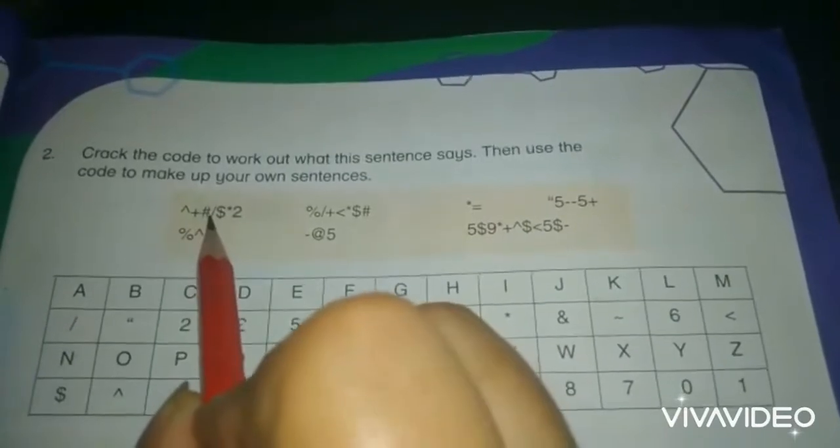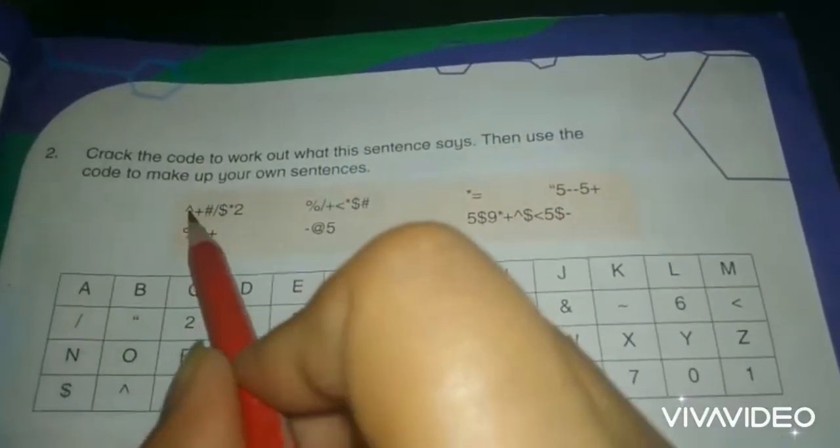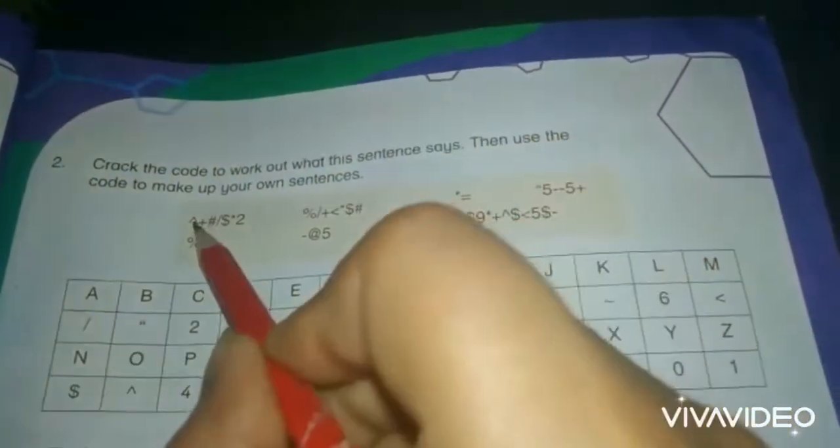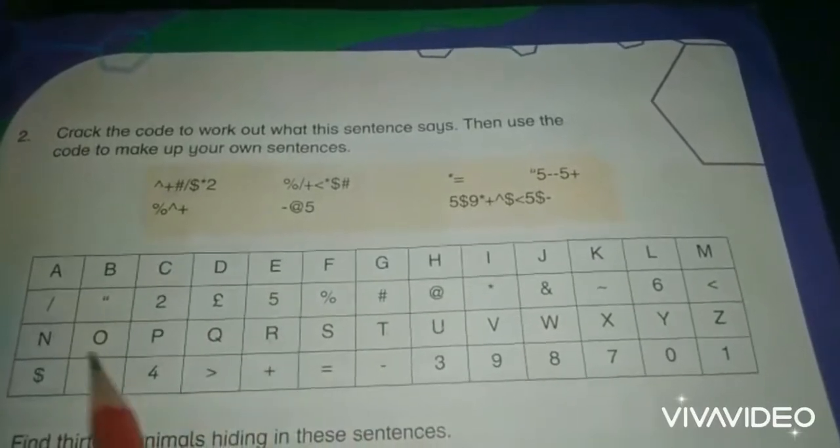We will start from the first code. For example, this symbol has alphabet O.